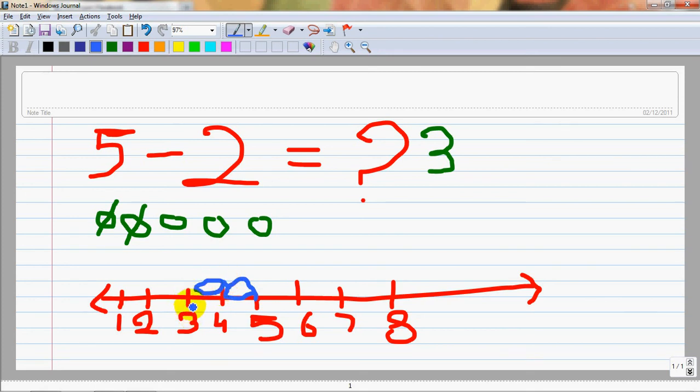1 and 2. So, where have we ended on? 3. So, isn't that our answer? 3. So, let's repaint. So, that's the answer. See, we counted 1 and 2. So, we landed on this number and this number is 3. That is our answer.